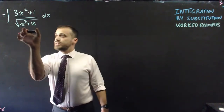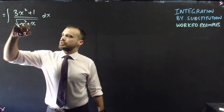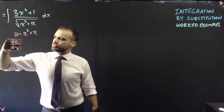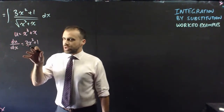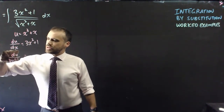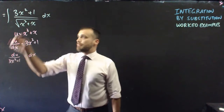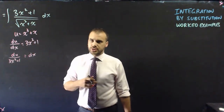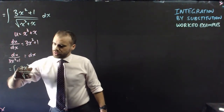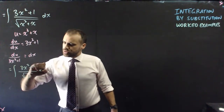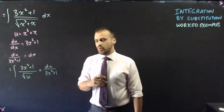Second example: the function inside the root is our u. Let u = x³ + x, which means du/dx = 3x² + 1. Rearranging: du = (3x²+1)dx, so dx = du/(3x²+1). Substituting back in: we keep the (3x²+1) for now, and the root becomes √u, giving ∫(3x²+1) · √u · du/(3x²+1).